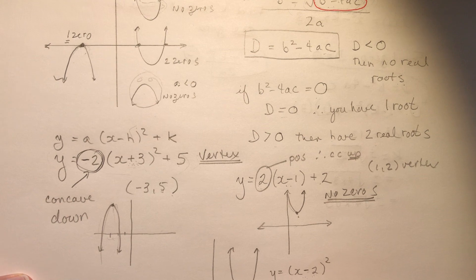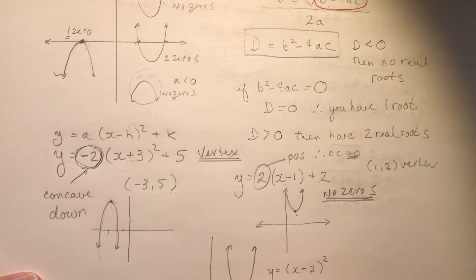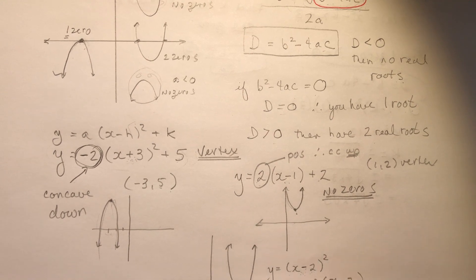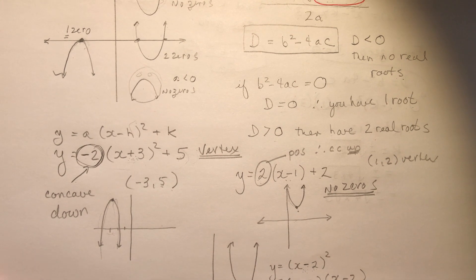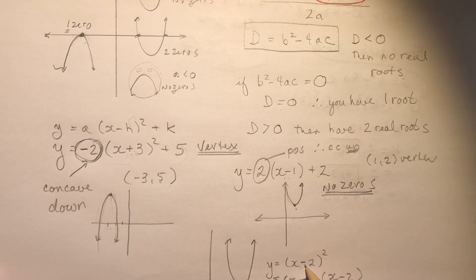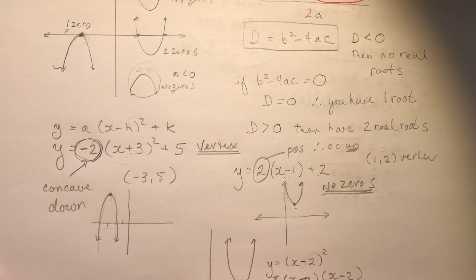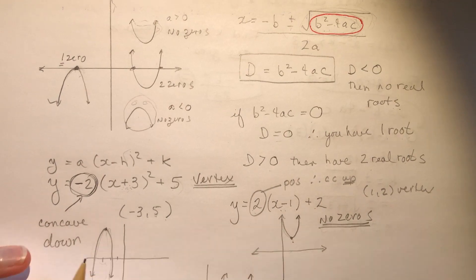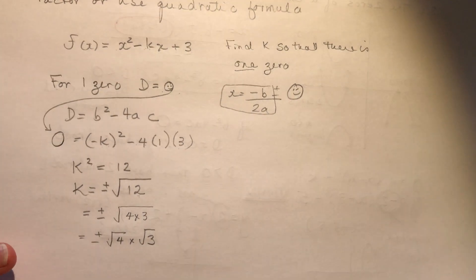When you have one real root, it's called a double root — because you actually get two answers that are the same value. It's called a double root because you have two identical solutions, which really just means one single root. The parabola is translated so it only touches the x-axis at exactly one spot.